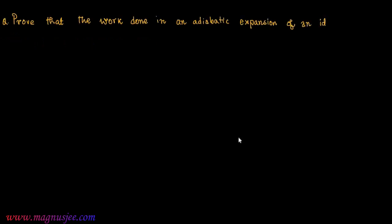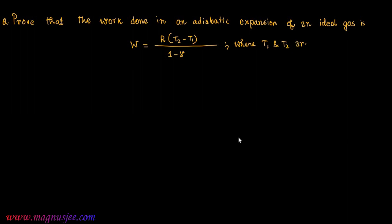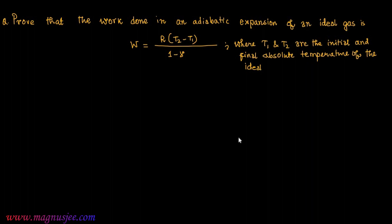Prove that the work done in an adiabatic expansion of an ideal gas is W = R(T2 - T1) / (1 - γ), where T1 and T2 are the initial and final absolute temperatures of the gas.